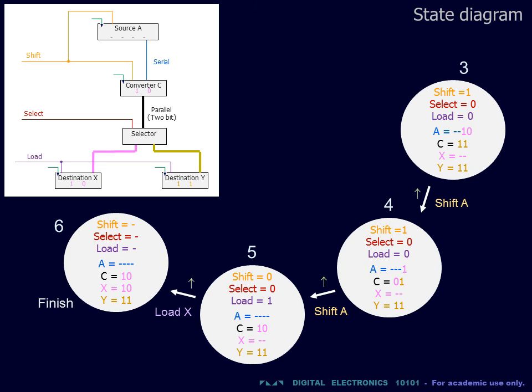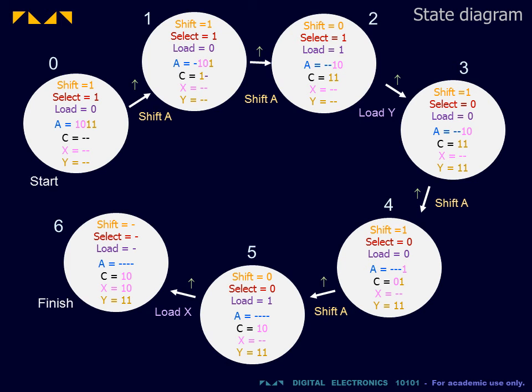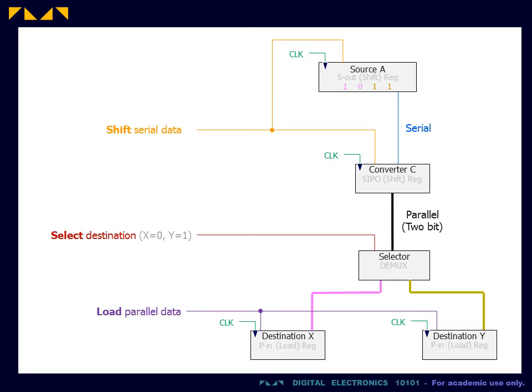Once this is done, the bits originally in the source A have now been successfully transferred to the two destinations x and y. We now need to supply this sequence of control inputs to our data circuit. In the next video, we will see how to do this in an automated way.